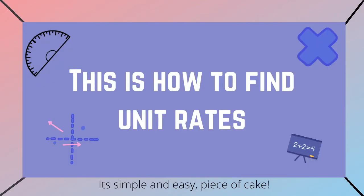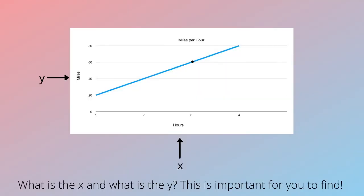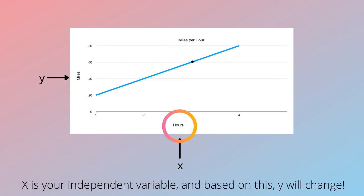This is how to find unit rates. It's simple and easy, piece of cake. What is the x and what is the y? This is important for you to find. x is your independent variable, and based on this your y will change.